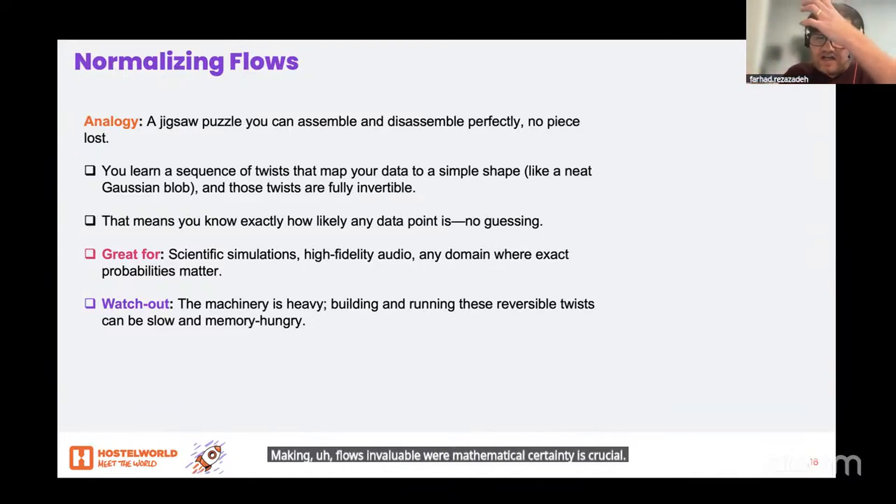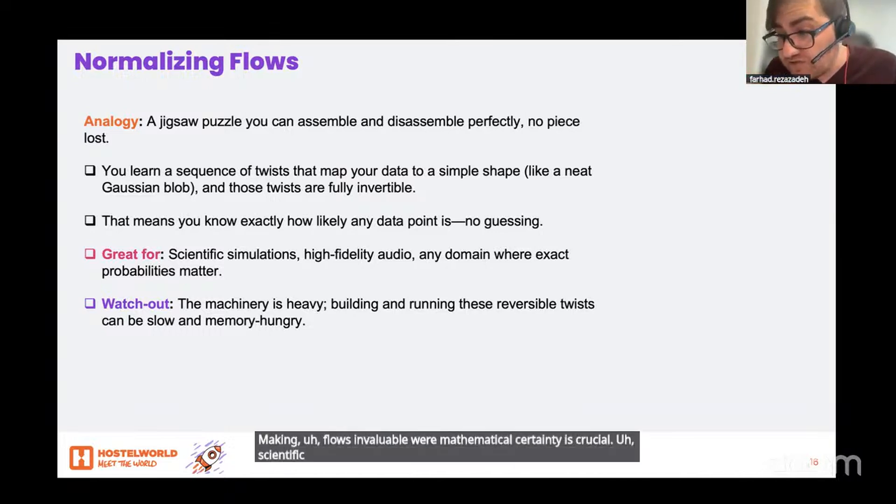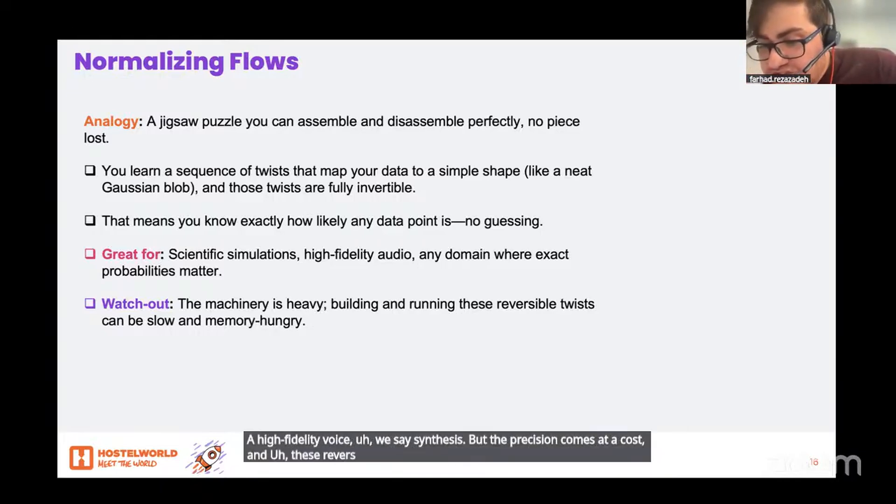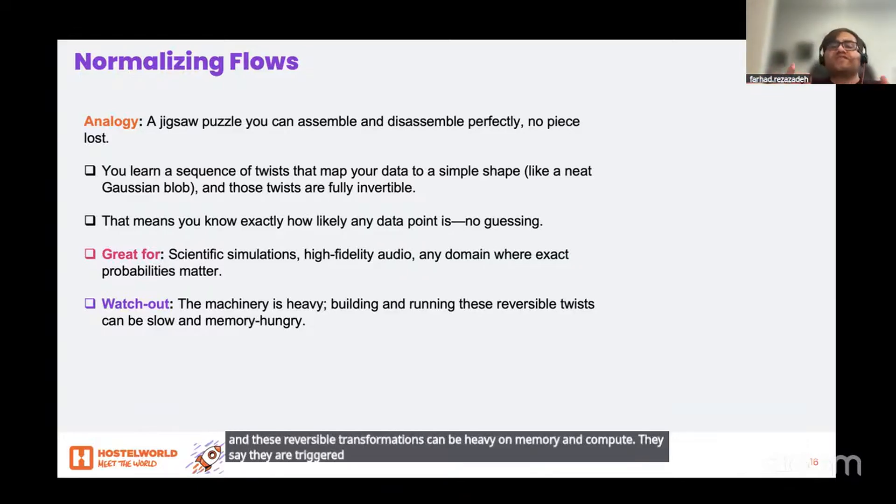This exactness means you know precisely how likely any given sample is, making flows invaluable where mathematical certainty is crucial—think scientific simulations, high-fidelity voice synthesis. But the precision comes at a cost, and these reversible transformations can be heavy on memory and compute; they are trickier to scale.